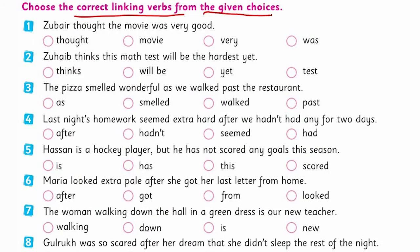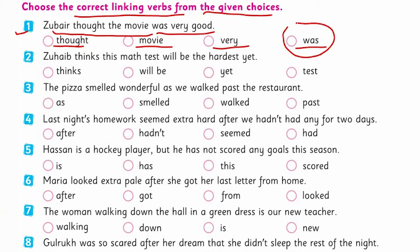Let's do the exercise on page number 50 of your textbook — choose the correct linking verb from the given choices. The first one: 'Zubair thought the movie was very good.' The linking verb here is 'was.' 'Thought' is the main verb. 'Was' is connecting the noun and the adjective 'good,' which is an adjective quality. So 'was' is the linking verb here, connecting both the noun and the adjective with one another.